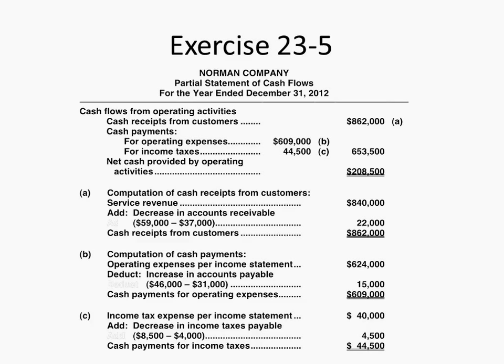So your net cash provided by operating activities is your receipts minus your payments — that's the 208,500. Hopefully for some of you this is starting to repeat, and you're starting to make some sense of it.